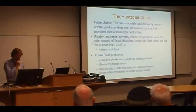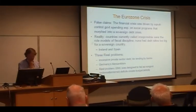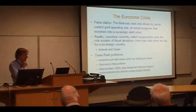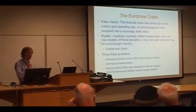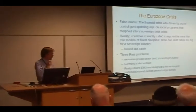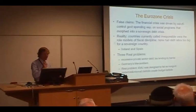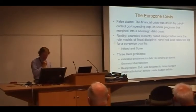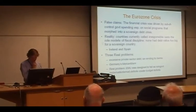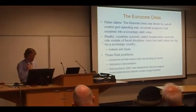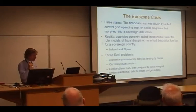The Eurozone crisis: the false claim is that it was driven by out-of-control government spending, especially on the periphery — by these Mediterranean countries who can't control themselves — especially on social programs. The story they tell is that all the Greeks are retiring at really young ages with very generous benefit packages. The reality is that many of these countries actually were the paragons of fiscal discipline, running budget surpluses before the crisis.